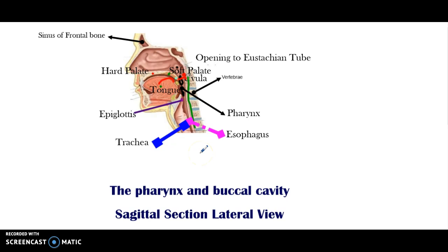The process of swallowing consists of two different phases. The first phase, known as the oral phase, is a voluntary phase. The second phase, known as the esophagopharyngeal phase, is an involuntary phase. Once the food has been mashed and compacted into bolus, the tongue will lift the bolus towards the pharynx — you lift up your tongue and push the bolus towards the back of your mouth so it enters the pharynx area. This is the oral phase, and it's completely voluntary.